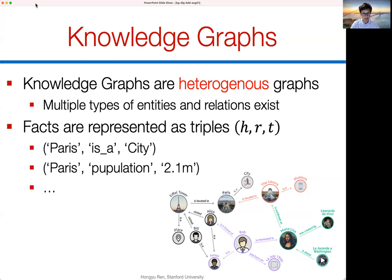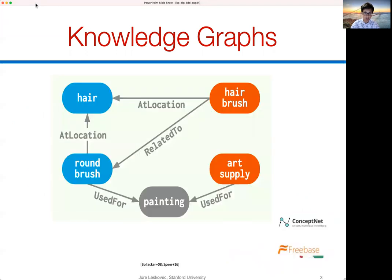For example, 'Paris is a city' — a triple has a head and a relation. Here, Paris and city are two entities and 'is a' is a relation. Or 'Paris has population 2.1 million' — Paris and 2.1 million would be entities and 'population of' would be a relation. We can encode in this graphical structure knowledge from many different domains.